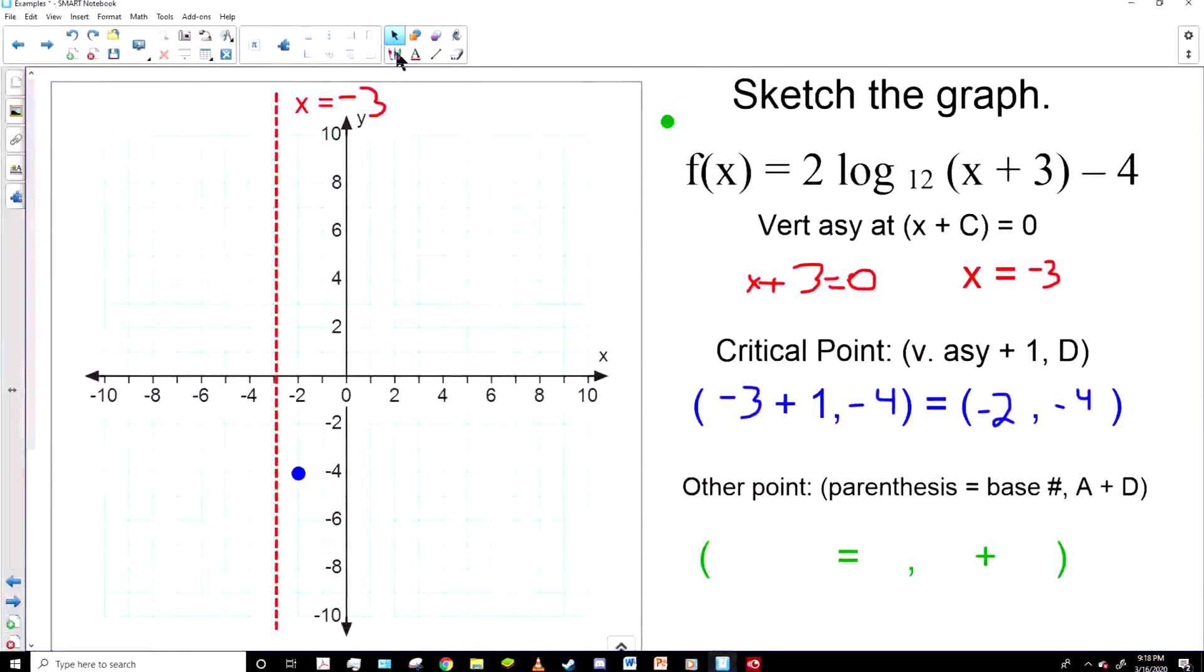So let's put that dot on our graph. And then let's get our second point. And for this one, we're going to need to set the parentheses, which is X plus three, equal to the base number of the log, which is 12. And so what plus three equals 12? Nine.